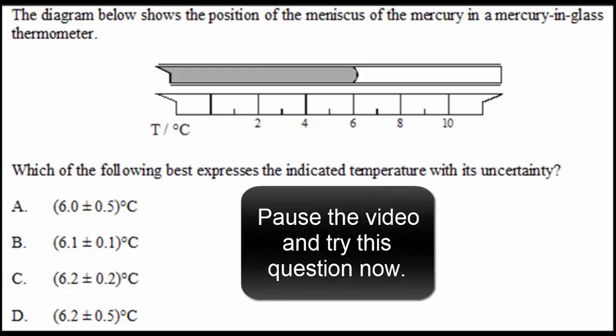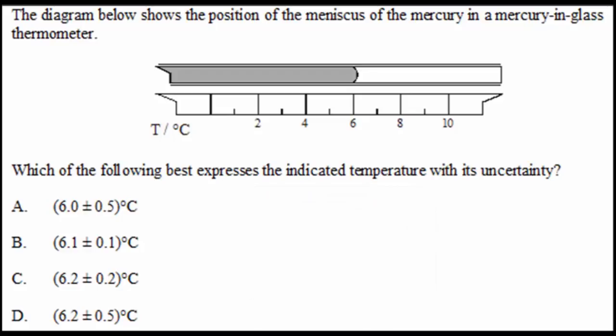Let's try an IB question. Pause the video. Try the question. Come back for the answer. The first thing you want to do is determine the uncertainty. That's supposed to equal half the smallest scale division. Each scale division is one unit. Therefore, the uncertainty is 0.5 units. Therefore, the correct answer is either A or D. So we've got to choose between 6.0 and 6.2. And this turns out to be kind of tricky.